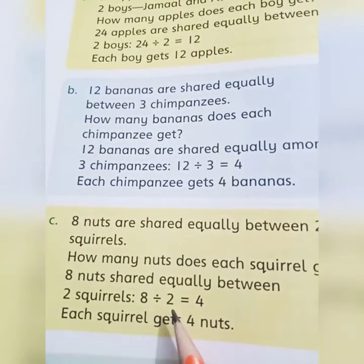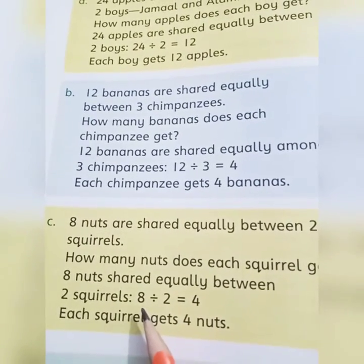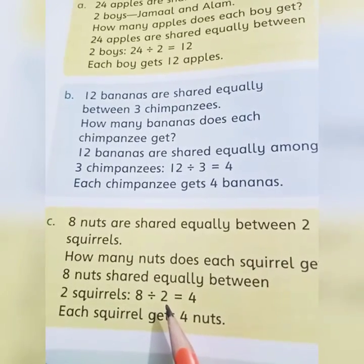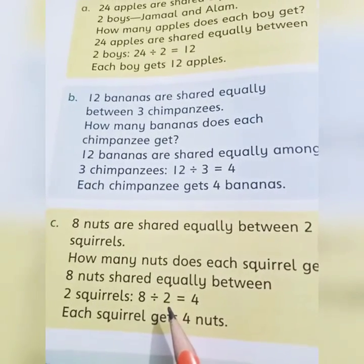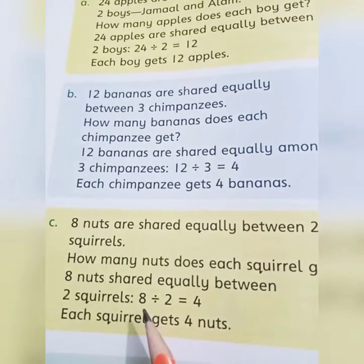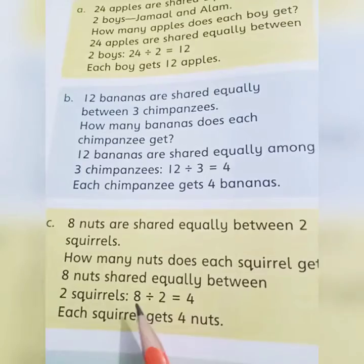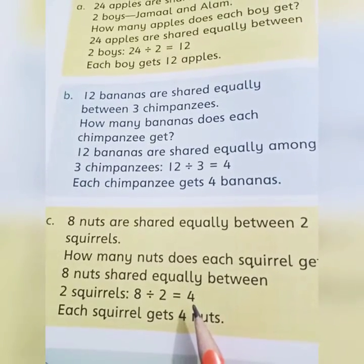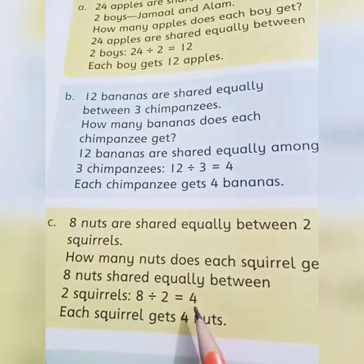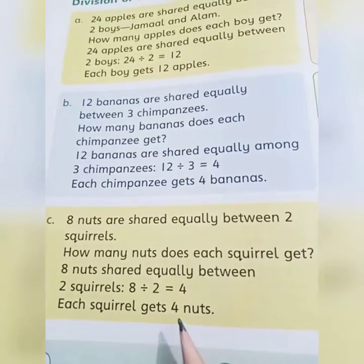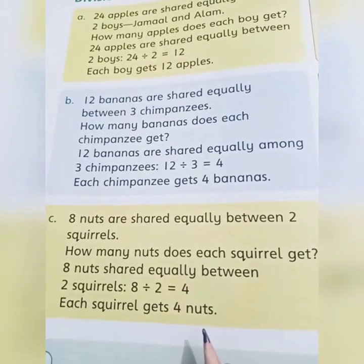Say the table of 2 to get 8: 2×1=2, 2×2=4, 2×3=6, 2×4=8. 2 fours are 8! So our answer is 4. Each squirrel gets 4 nuts.